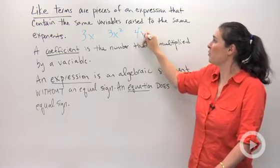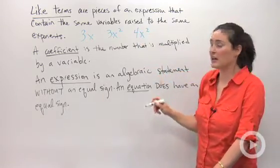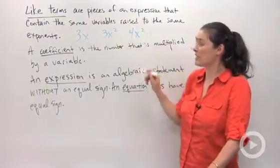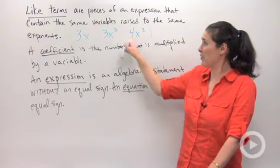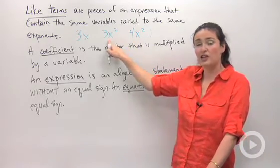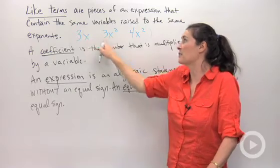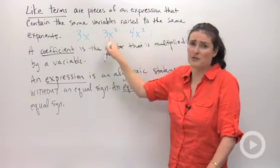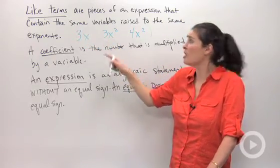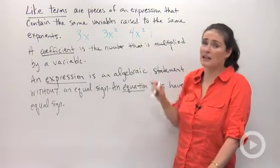If I stick in there 4x squared, now these ones would be like terms because they both have x squared pieces. Don't be thrown off by this big number out front. It doesn't matter if they're the same or different. To look for like terms, you're only looking for the variables with the same exponents.